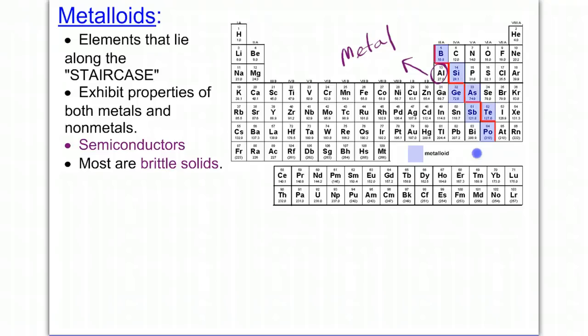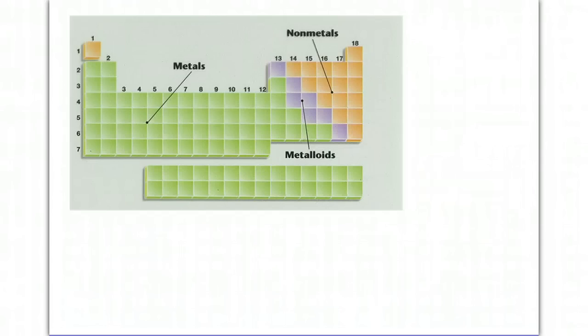If a substance is a metalloid, then it exhibits properties of both metals and nonmetals. While metals are good conductors, metalloids are semiconductors, and while metals are hard and dense, metalloids are considered brittle solids. Here's a chart showing you the breakdown of metals versus metalloids versus nonmetals. All the metals are in green on the left side, the metalloids are in purple which fall along the staircase, and the nonmetals are in orange on the right-hand side.